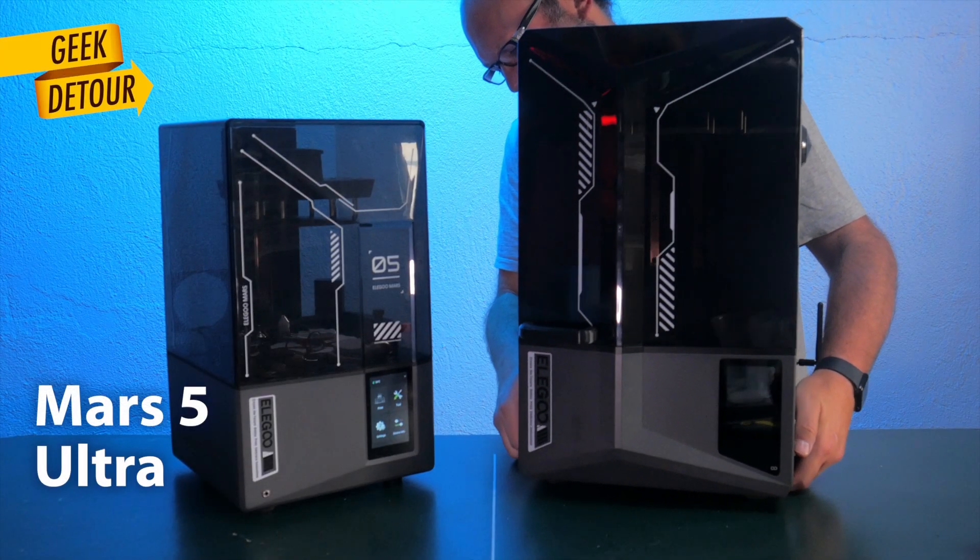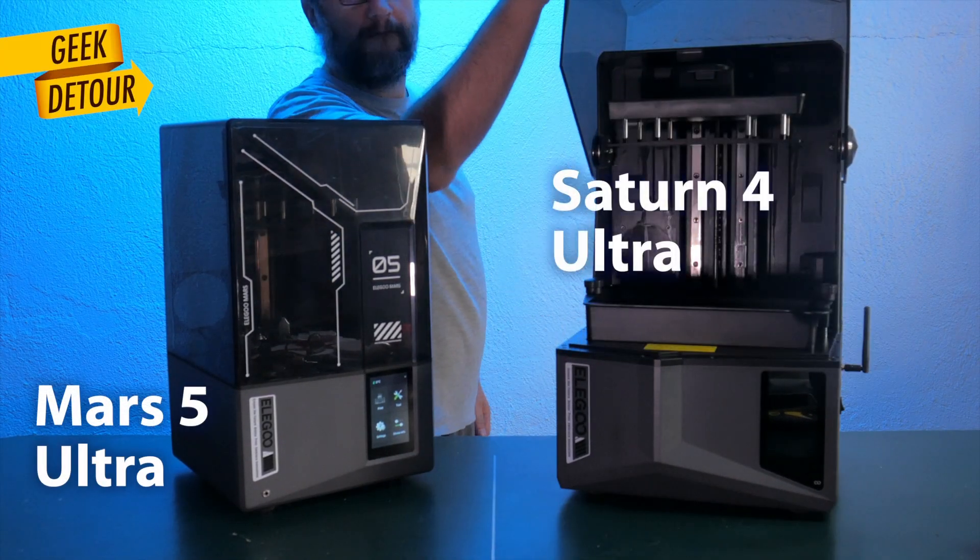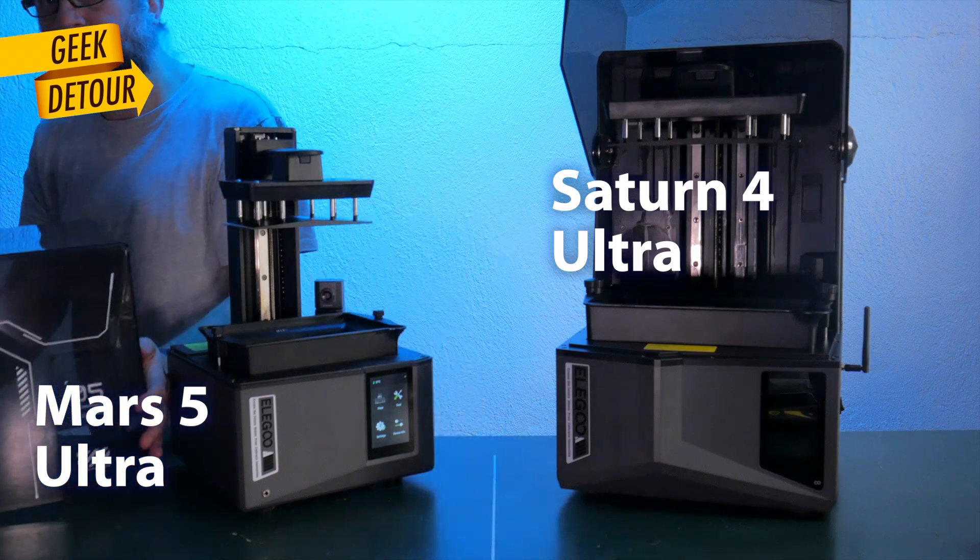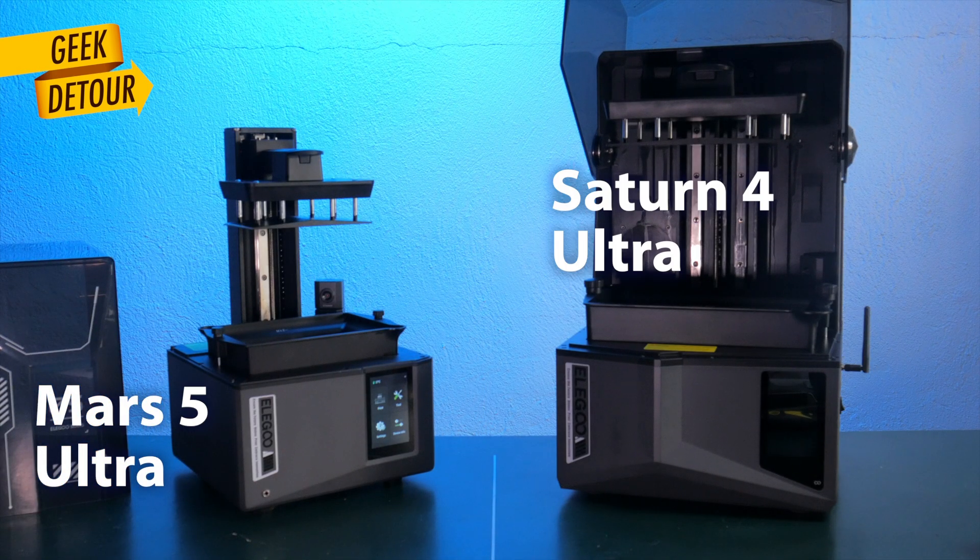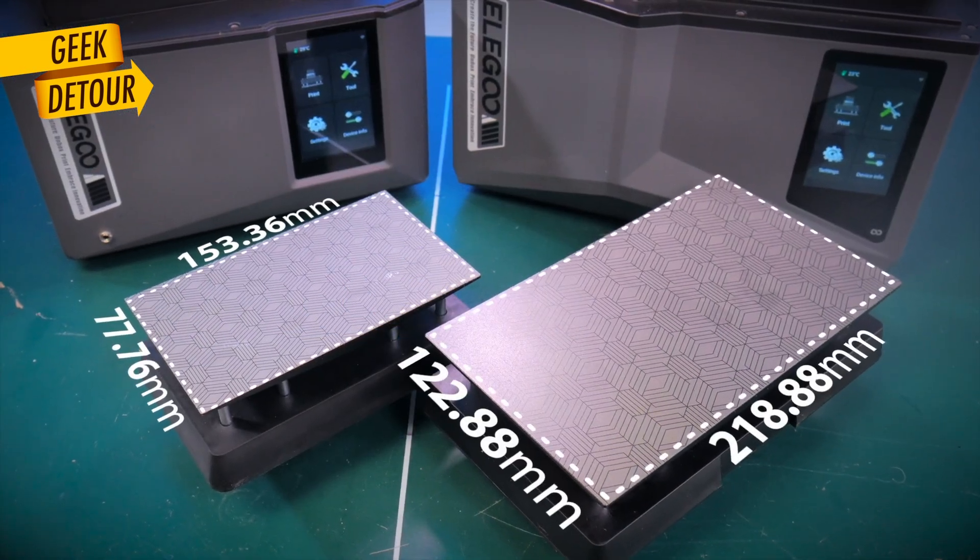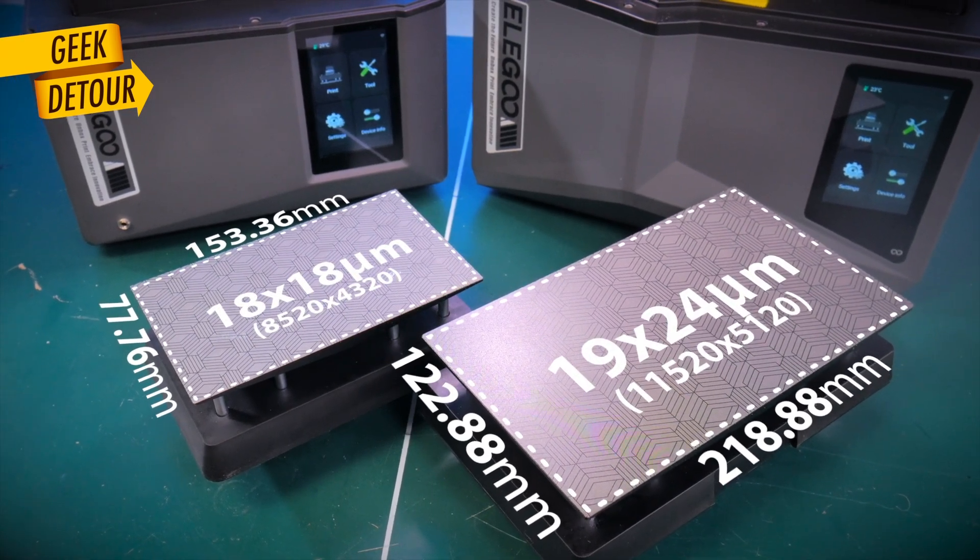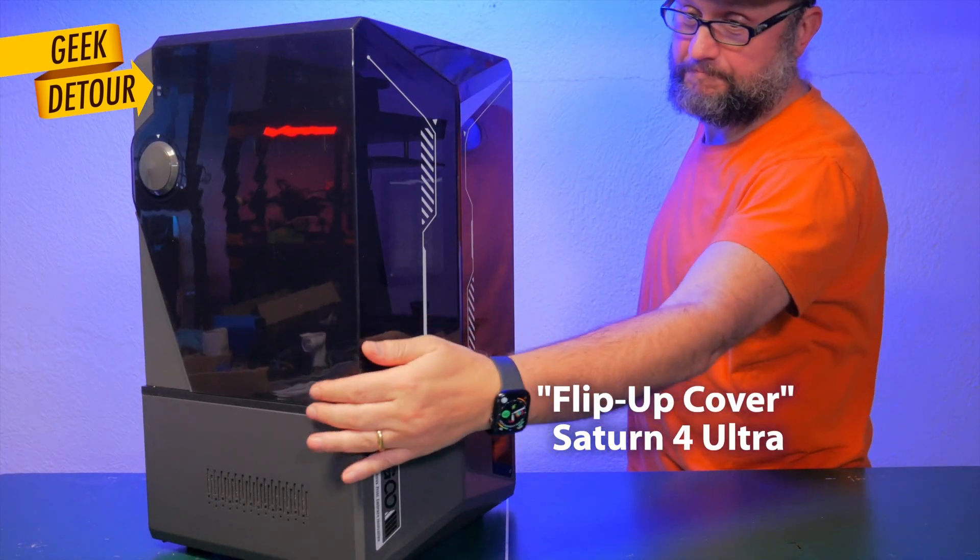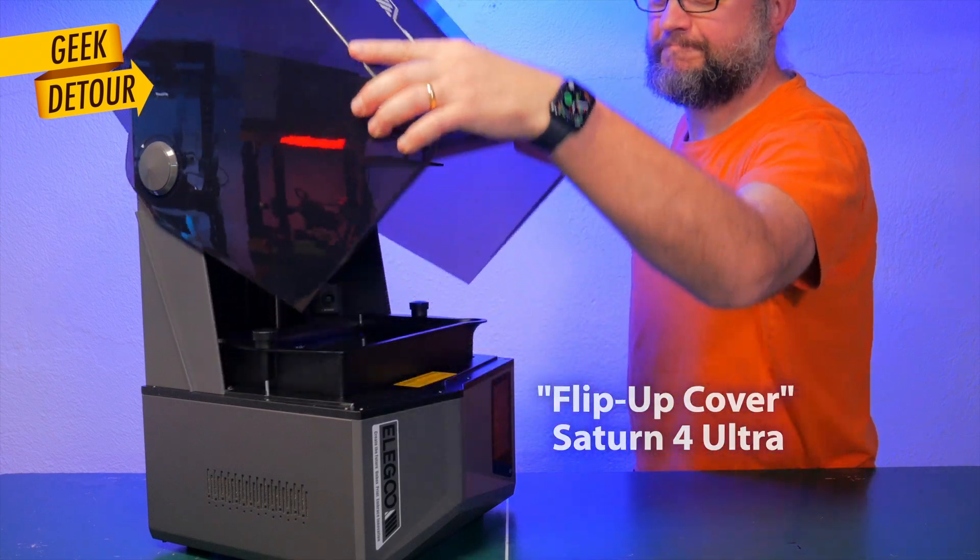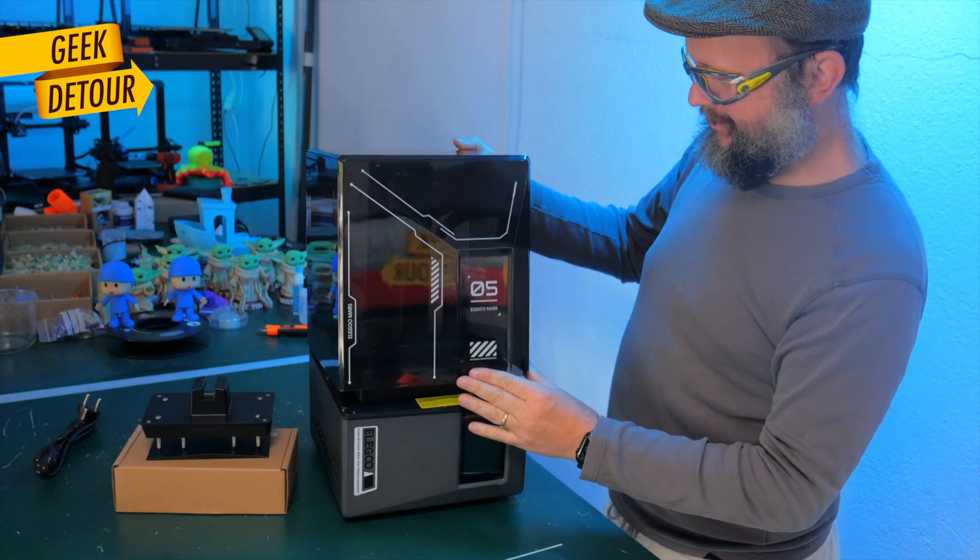The Mars 5 Ultra is the little brother of the Saturn 4 Ultra that I already reviewed here in the channel. With three differences. It is smaller. The resolution is a bit higher. And sadly, it doesn't have the flip up cover. I am still thinking what I could do about it.